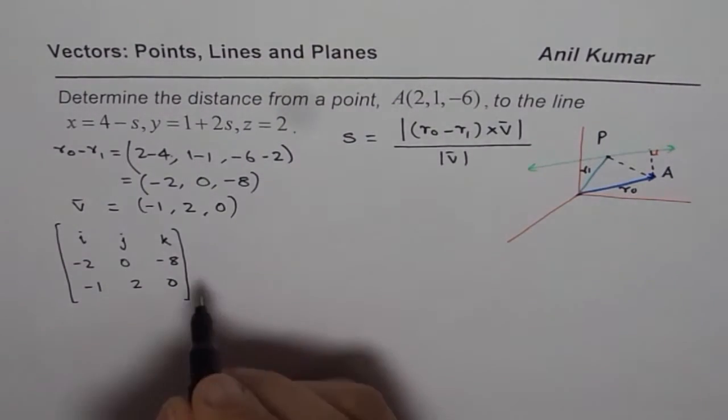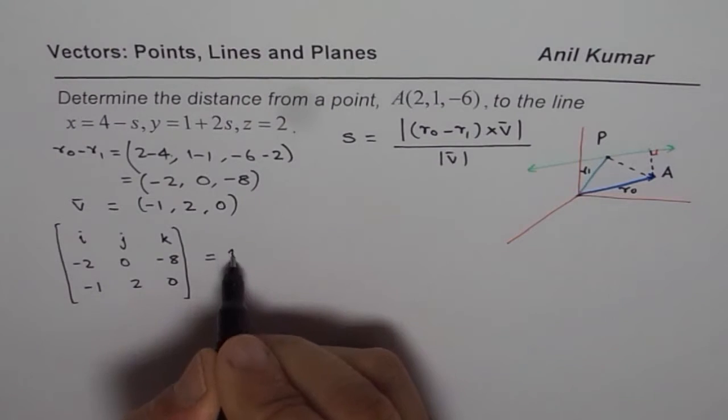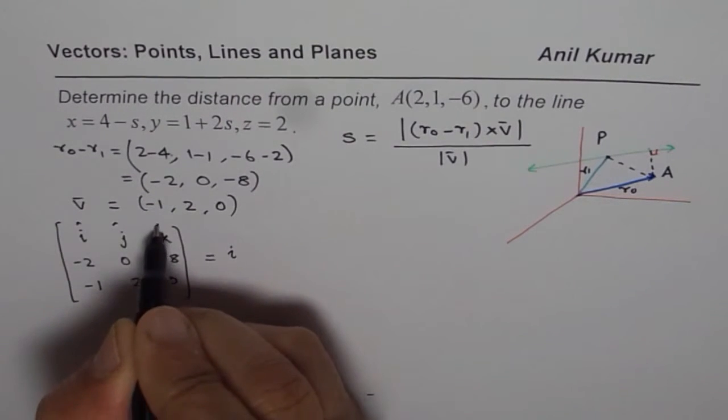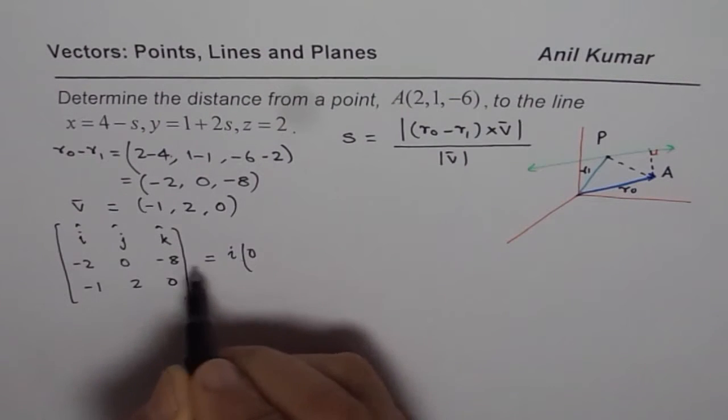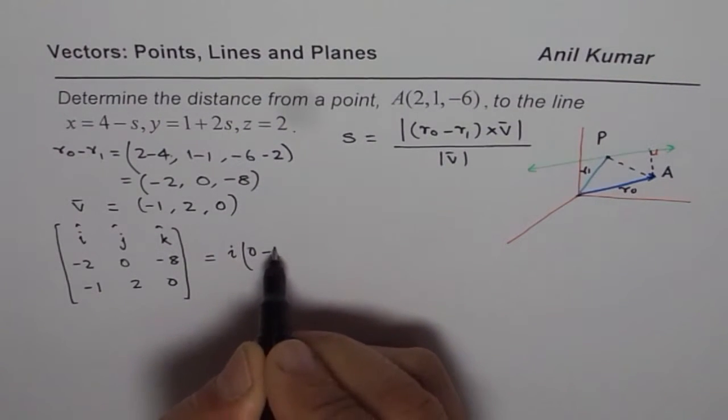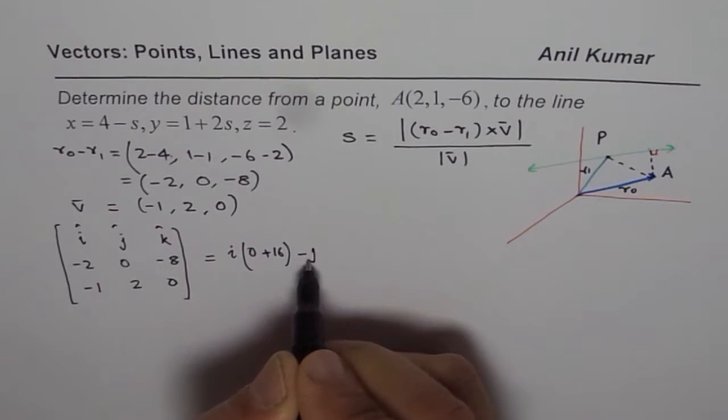So we have i, these are unit vectors, and 0, minus, of minus, will give us plus 16, minus j.